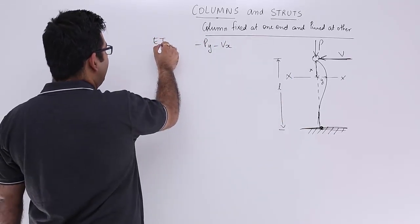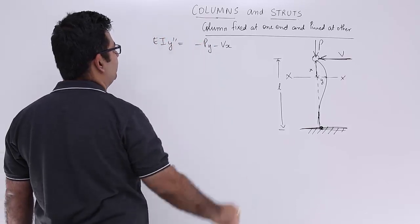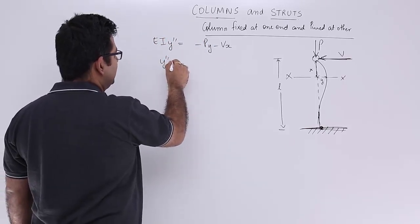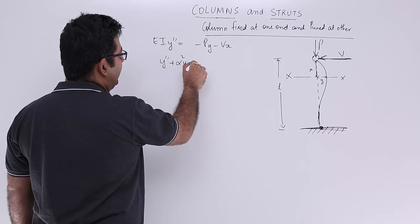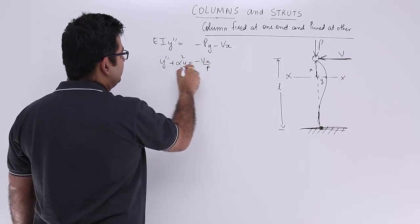And this is equal to EI y double dash is equal to this. So when you resolve that you get y double dash plus alpha square y is equal to minus vx upon p.